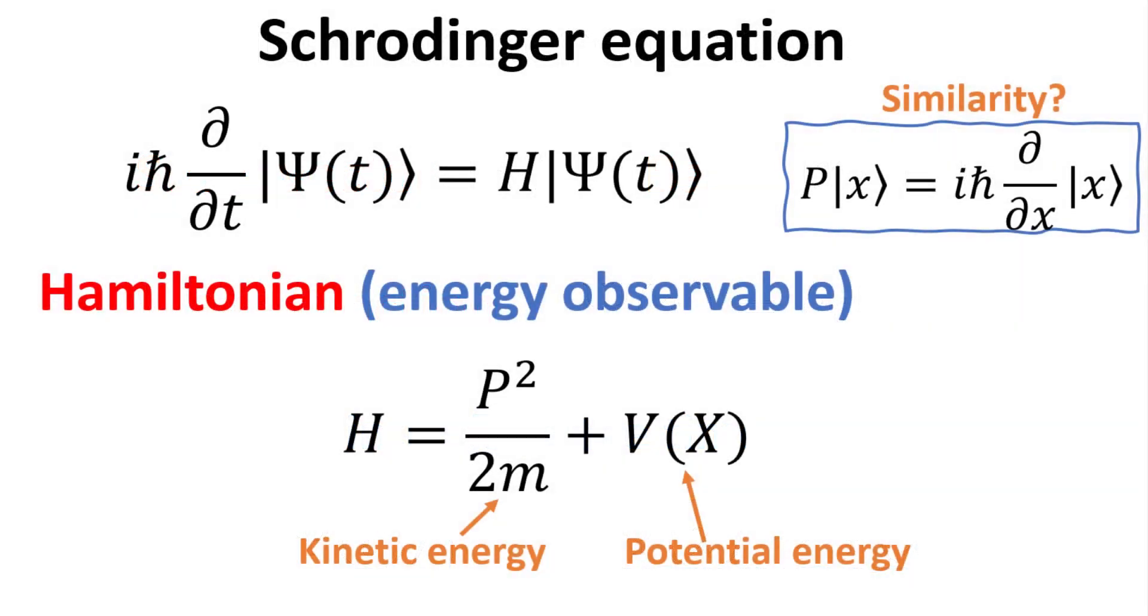We begin by first writing down the Schrödinger equation, which is a differential equation that describes how the state vector is supposed to evolve in time. This Schrödinger equation is one of the quantum mechanics postulates. H is called the Hamiltonian, and is one of the most important observables of any physical system, its energy. Being an observable, H must of course be Hermitian.